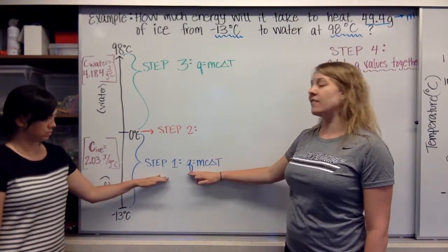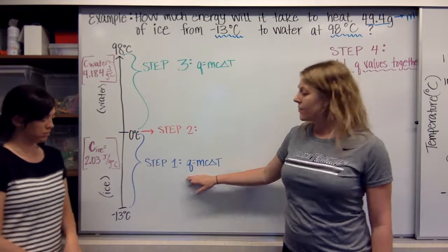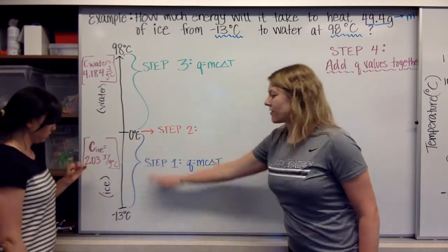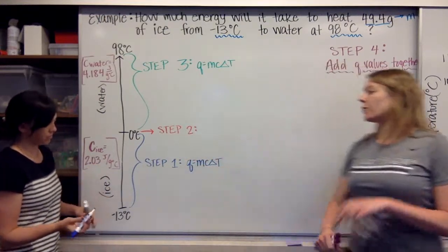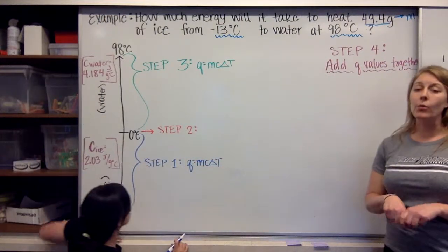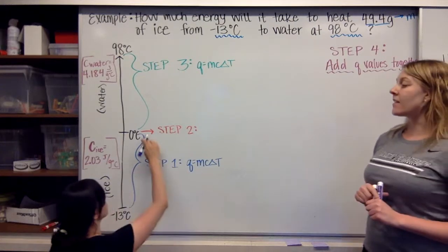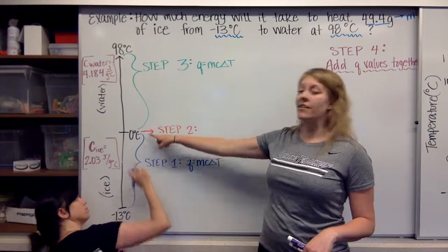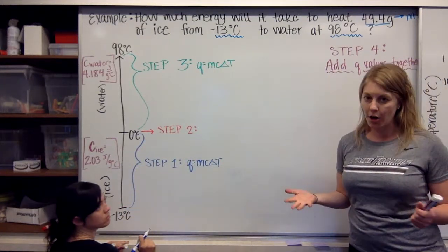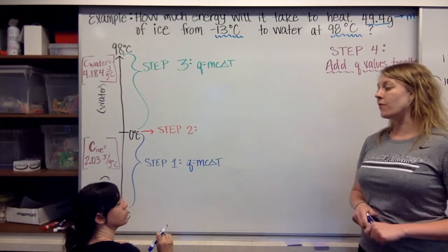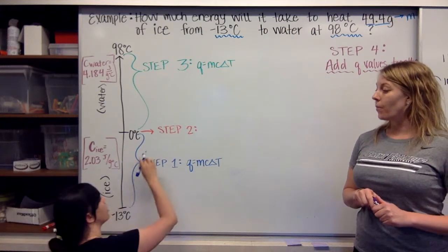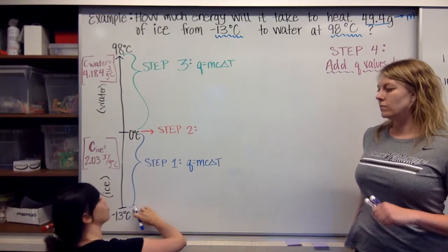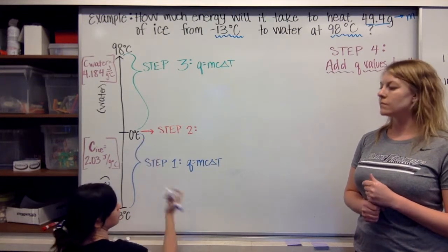We're going to start at the bottom because we're starting at negative 13 degrees Celsius. Step one: we're going to calculate Q equals mcΔT for ice, because between negative 13 and zero degrees Celsius we have ice, not water. This tells us how much energy we need for our ice to go from negative 13 degrees Celsius to zero degrees Celsius.